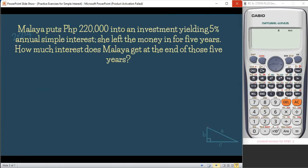Malaya puts P220,000 in an investment yielding 5% annual simple interest. She left the money in for five years. How much interest does Malaya get at the end of those five years? First, let's ask ourselves, what is being asked in the problem? So as you can see, here in our problem, there's how much interest does Malaya get. So meaning to say, we are dealing with interest.